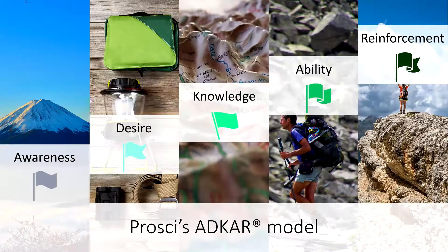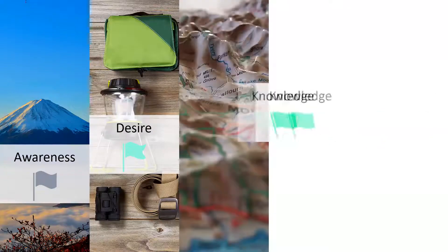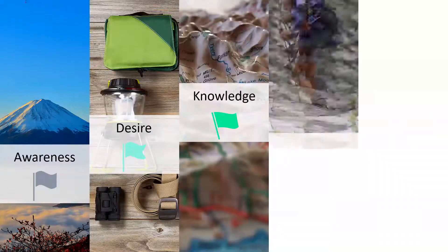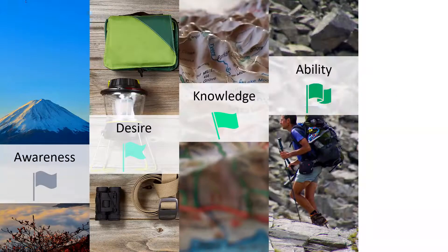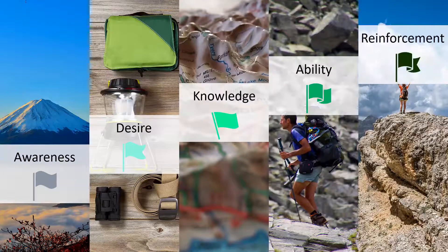ProSci's ADCAR model is based on five sequential steps: awareness, desire, knowledge, ability, and reinforcement.